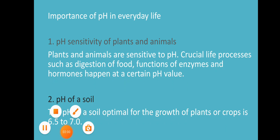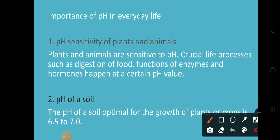There are some important uses of pH in our everyday life. We use the pH range to protect our body and our environment; we have to maintain the pH range, otherwise we will suffer. Let us talk about the pH sensitivity of plants and animals. Plants and animals are sensitive to pH because crucial life processes such as digestion of food and the function of enzymes and hormones happen at a certain pH level.